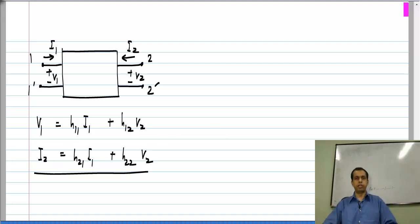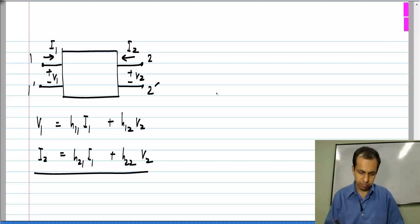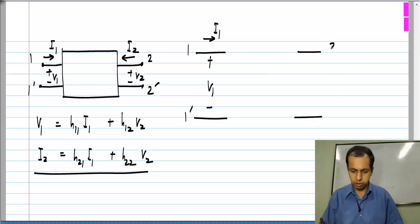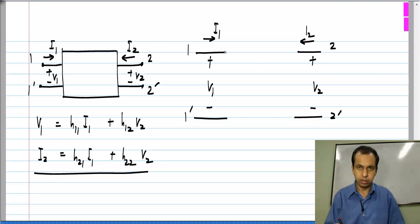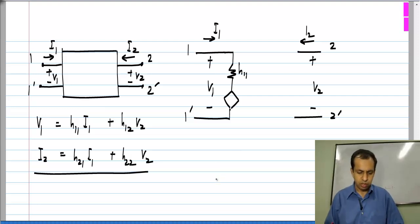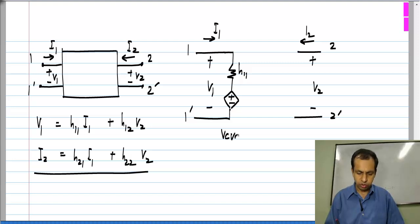As expected from the name hybrid parameters, the equivalent circuit will also be hybrid — on one side it will have series branches and on the other side parallel branches. Port 1 has V1 across it and I1 through it. V1 is the sum of two drops: a resistance of value h11, and a voltage-controlled voltage source whose value is h12·V2.